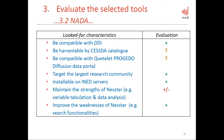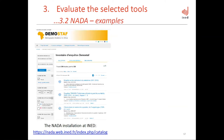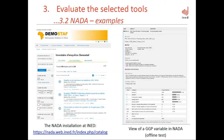On the left you can see an example of NADA — the one installed at INED in the framework of a project called DEMOSTAF, in collaboration with statistical offices in Africa. On the right, you have a GGP variable view in NADA, which is the result of a test we carried out at INED. You can see the variable metadata as well as the variable distribution.